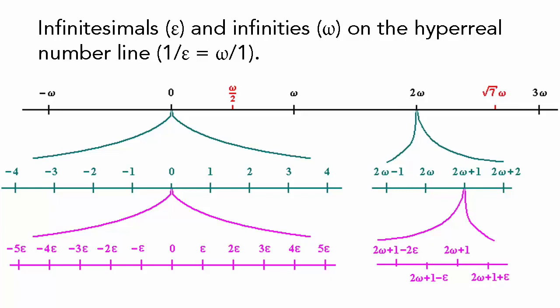Multiples of omega and epsilon are allowed as well, so that for example, 3 omega plus pi minus epsilon root 2 is a hyperreal number. There are hyperreals such as omega squared, which is greater than any real multiple of omega, and epsilon squared, which is smaller than any real multiple of epsilon.